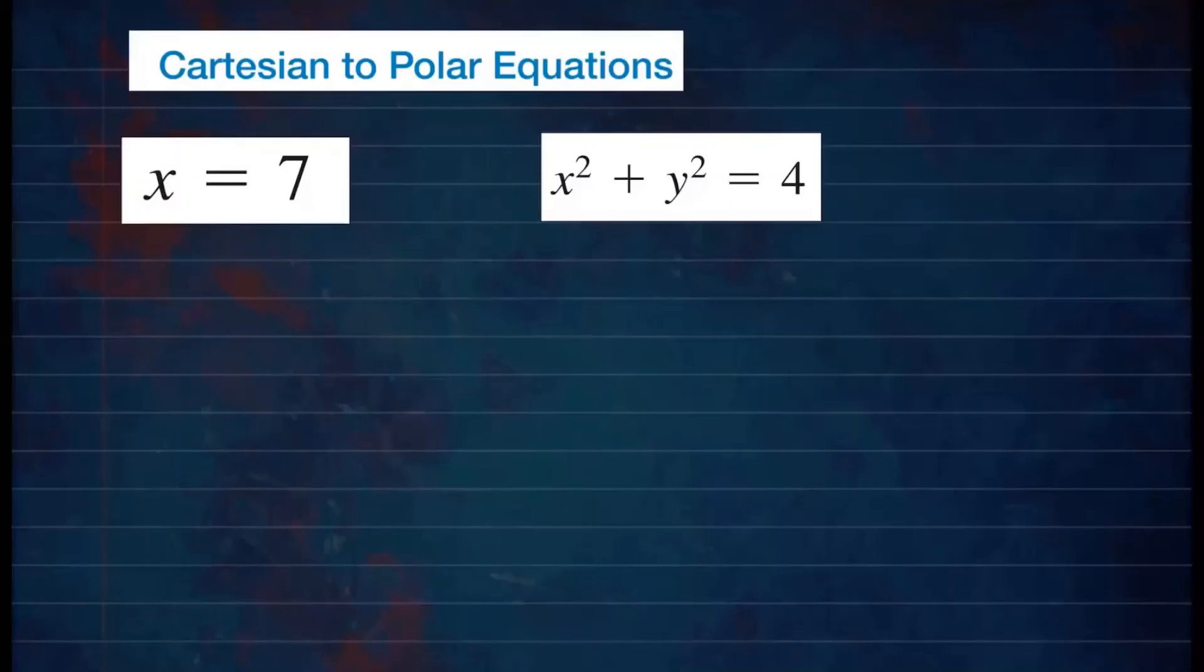Now let's practice writing Cartesian equations into polar equations. So for the first one right here, let's call this 1, let's call this 1, 2. So we have x equals 7. Well, we know x is r cosine theta, so we can write this as r cosine theta equals 7. So there you have it. That's your equation in polar form for this one.